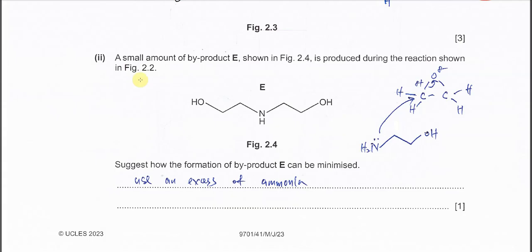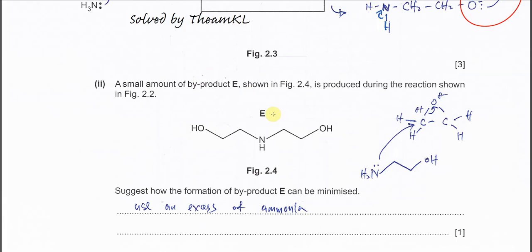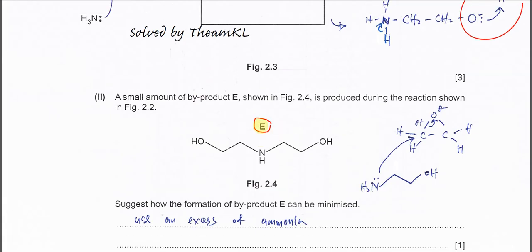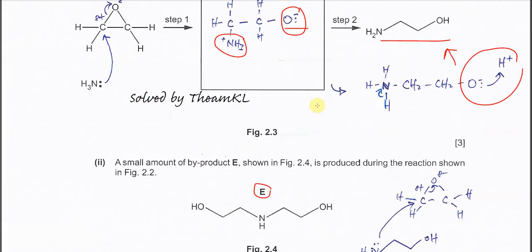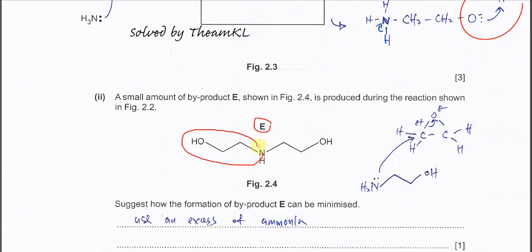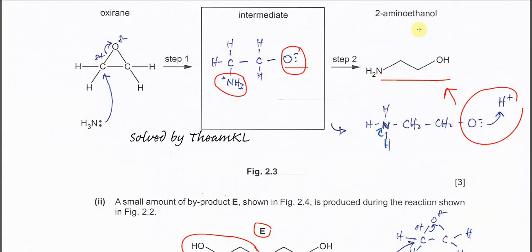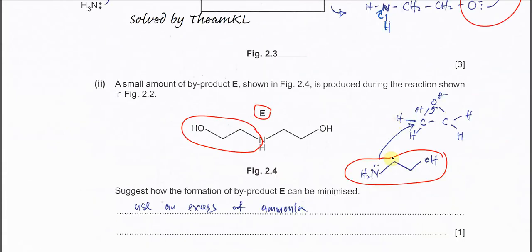For part two: a small amount of byproduct E is produced during the reaction. From the structure we can see that byproduct E has an extra group. This means it is the product 2-aminoethanol itself that reacts further with the oxirane reactant to form the byproduct, rather than ammonia.